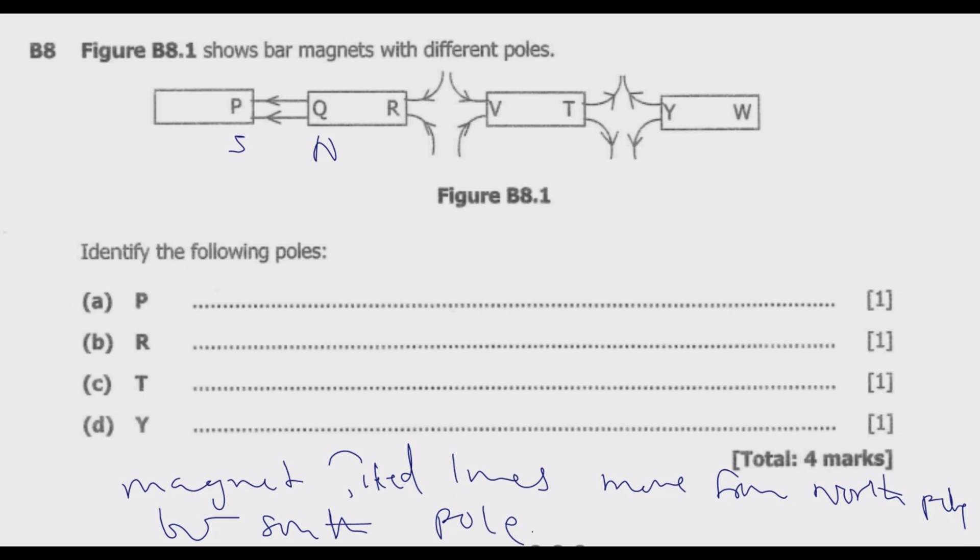We look at R. R, they are entering. Remember they always come out from north then enter from south. So R should be south. Then they're also entering in V. So what you notice in this case this is also south.